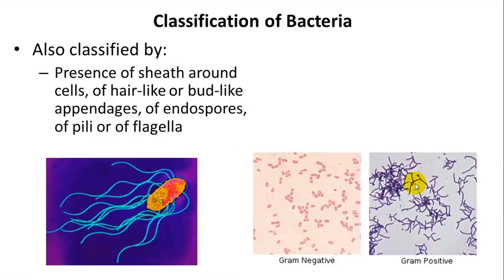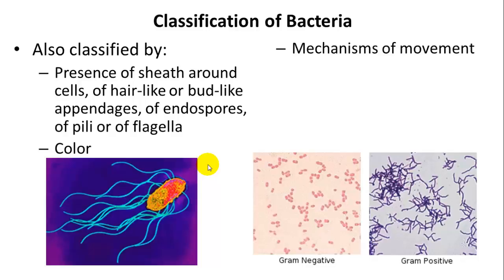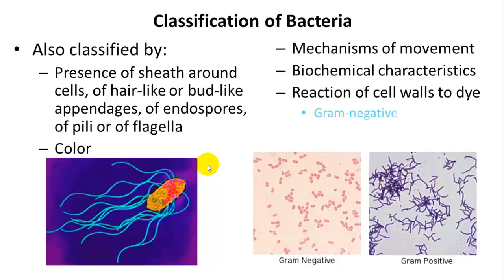Bacteria can also be classified by the presence of sheaths, hair-like or bud-like appendages, endospores, pili, or flagella — for example, some bacteria are characterized by having multiple flagella. They can also be classified by color after staining, how they move, their biochemical characteristics, and their reactions to dyes. In gram-staining, bacteria with a large amount of peptidoglycan stain dark purple — gram-positive — while those with very little stain reddish — gram-negative.